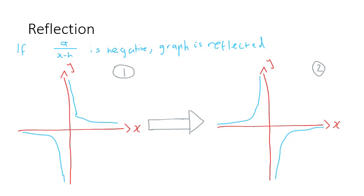Reflection: if a/(x − h) is negative, the graph is reflected. This means our rectangular hyperbolas are flipped over 180 degrees. Our normal rectangular hyperbola is shown in example one, but if a/(x − h) is negative and we reflect it, it becomes how it looks in example two.